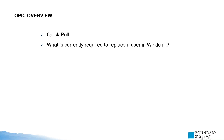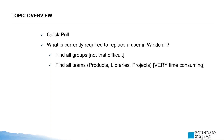So what is the current requirement to replace a user in Windchill? You need to find all the groups that a user is part of, which is usually not that difficult. You can go to the participant administrator, select the current user, and you'll be able to see all the groups they're part of. You can then create a new user, add them to the same groups, and remove the old user.